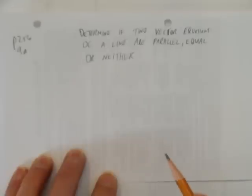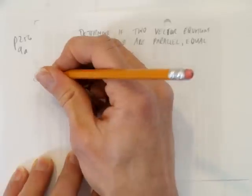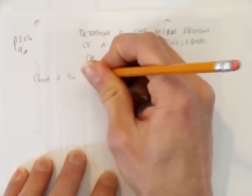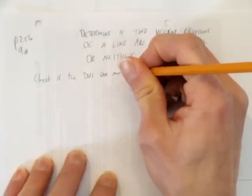We're given two equations there. You can look. I'm not going to write them down. They're right in your textbook. And so the first thing we want to do when we look at those two equations is check if the direction vectors, I'll just write dv, are multiples of each other.